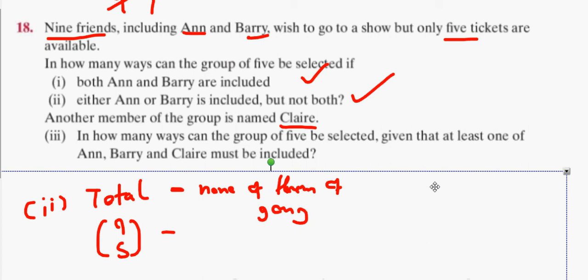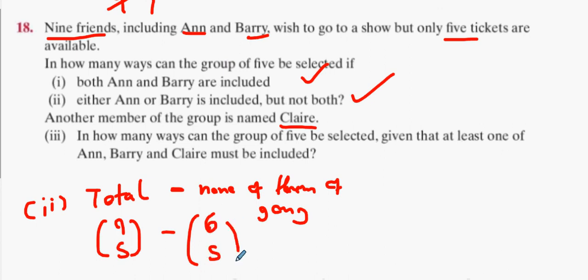Would that make sense to us? So, the three of them could be going, two of them could be going, or one of them could be going. So, for me, that's the total number of combinations to take away the amount of ways none of them are going. So, how do I make none of them go? There's nine people, but I'm not allowed to choose Ann, Barry, or Claire. So, how many people is that left over? Six people choose five. And when you throw all that into the calculator, you'll get 120 ways.